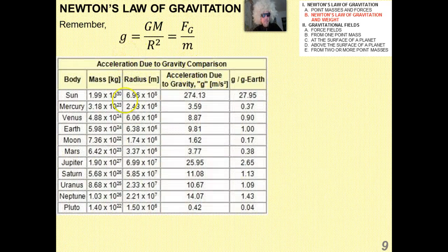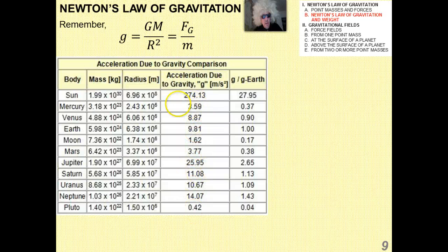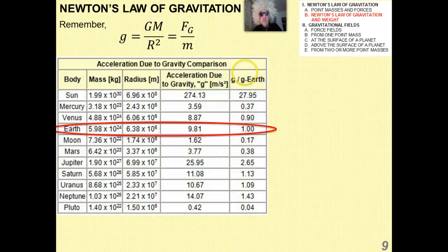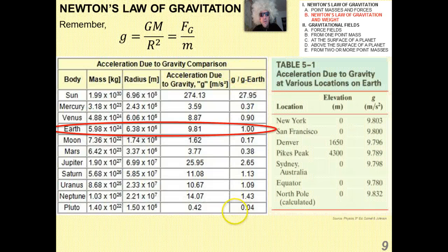Here are some accelerations due to gravity for different objects in the solar system. The Sun is the most extreme — something dropped on the surface of the Sun would accelerate at 30 times the rate of anything on Earth. On Pluto, an object would fall very, very slowly. The last column gives g as a multiple of Earth's g, which is 9.81 meters per second squared.